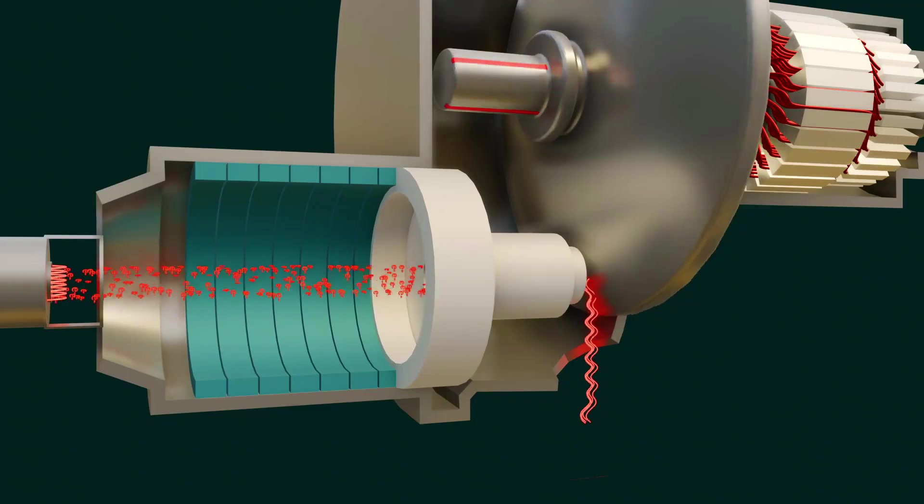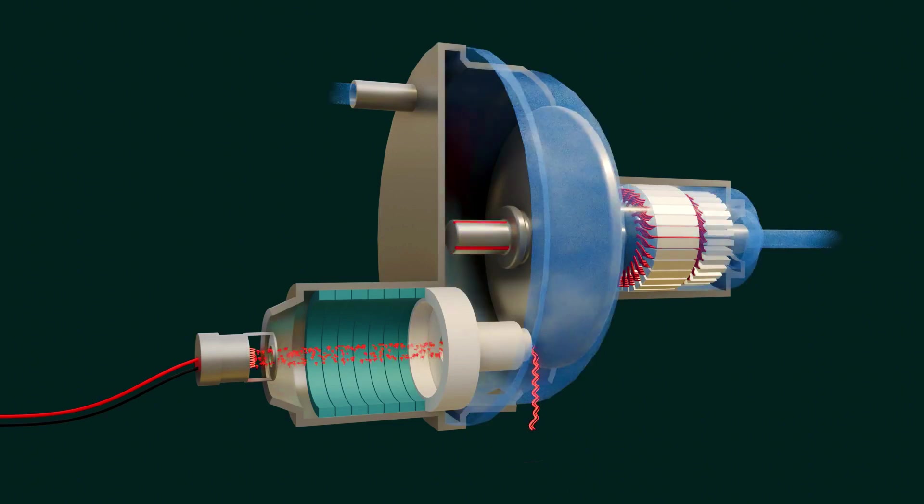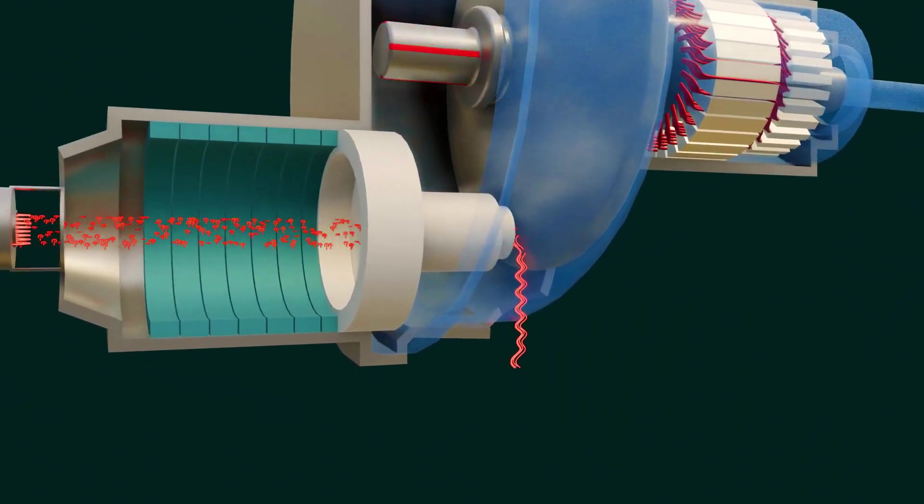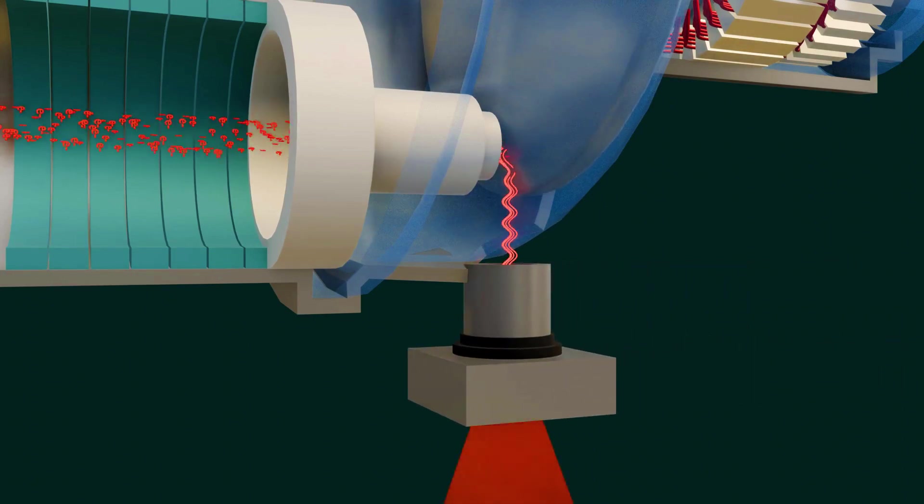To further manage the heat generated at the anode, water cooling or oil cooling systems are employed. The X-rays emitted from the anode disc are directed through a collimator, which focuses the rays onto a specific area.